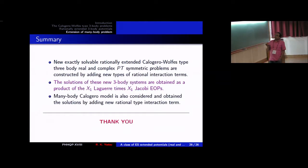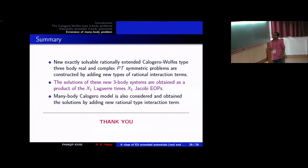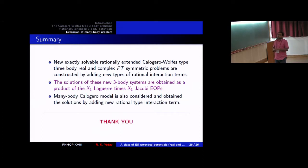In summary: we briefly discussed the normal Calogero three-body and n-body problems, then extended them using new interaction terms, obtaining solutions in terms of X1 exceptional Laguerre and X1 exceptional Jacobi polynomials. The many-body Calogero model was also extended by adding new rational-type interaction terms. Thank you.